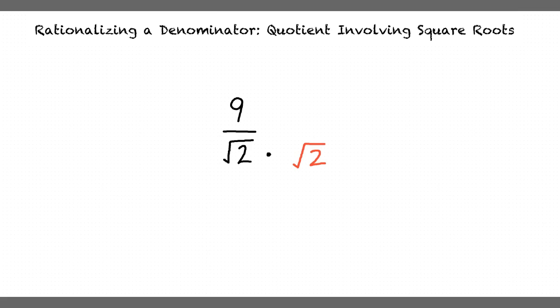We cannot simply multiply the denominator of our fraction by the square root of 2, as this would change the value of the fraction. Since we multiply the denominator by the square root of 2, we must also multiply our numerator by the square root of 2. We can do this because of the identity property of multiplication.